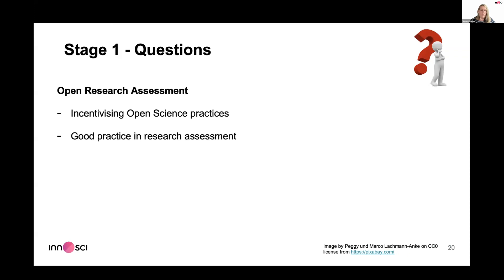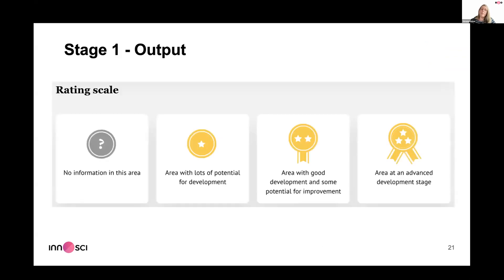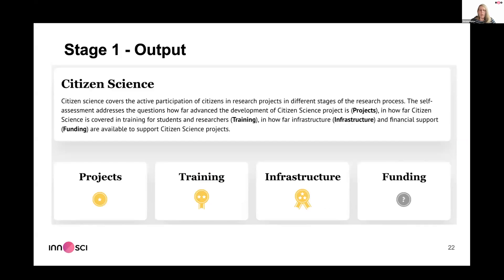For open research assessment, we look at incentivizing open science practices within the institution but also whether the institution follows good practice in research assessment. Once you've filled in the questionnaire, you get an output with a rating scale of one to three stars depending on how developed the institution is. For example, you might get one star for projects, two for training and infrastructure, three for another area, and a question mark where no information was entered.